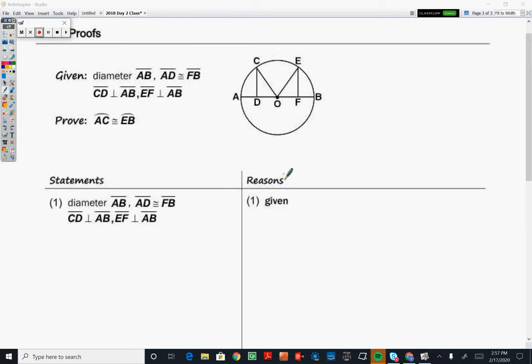Now circle proofs are no different than all of the other proofs that we've taken a look at so far. So we're going to take and apply some of those circle theorems that we've learned so far within this unit and apply those to a proof.